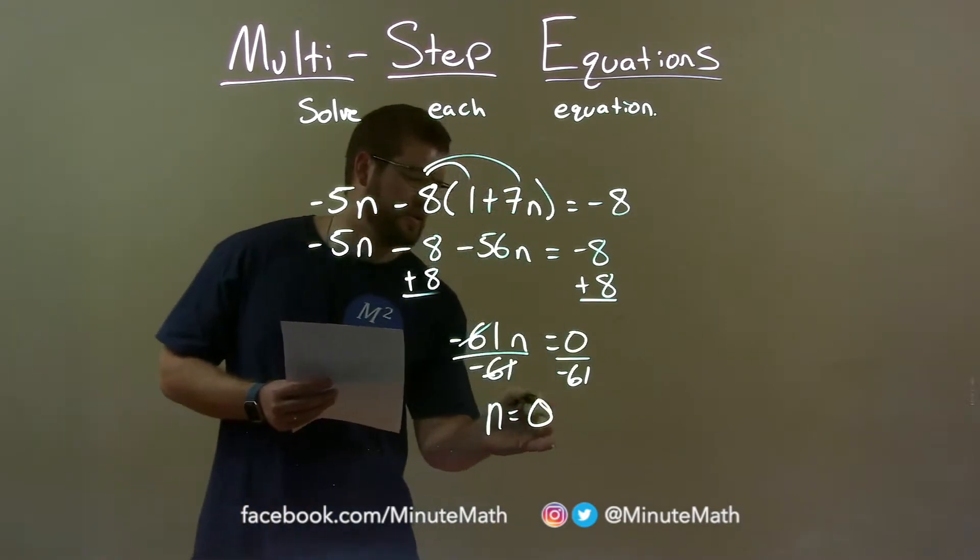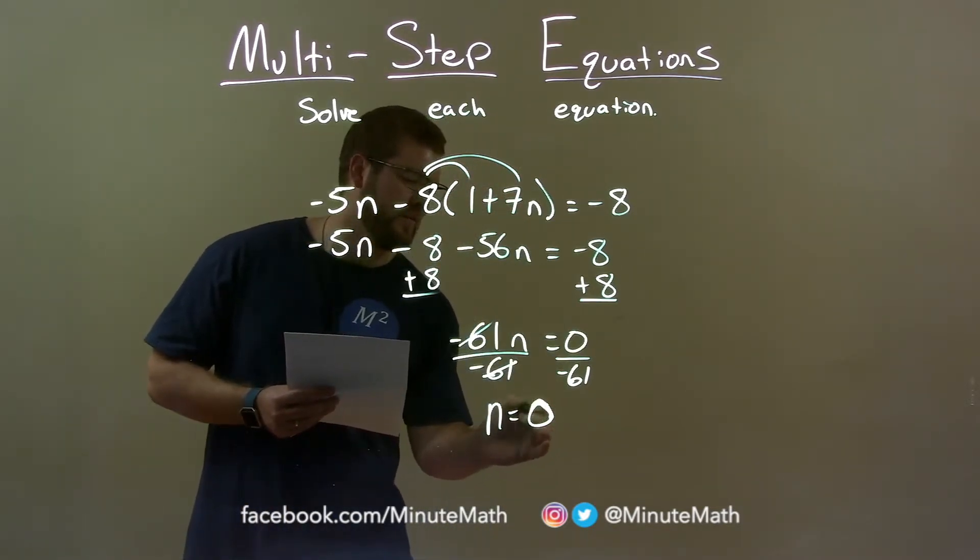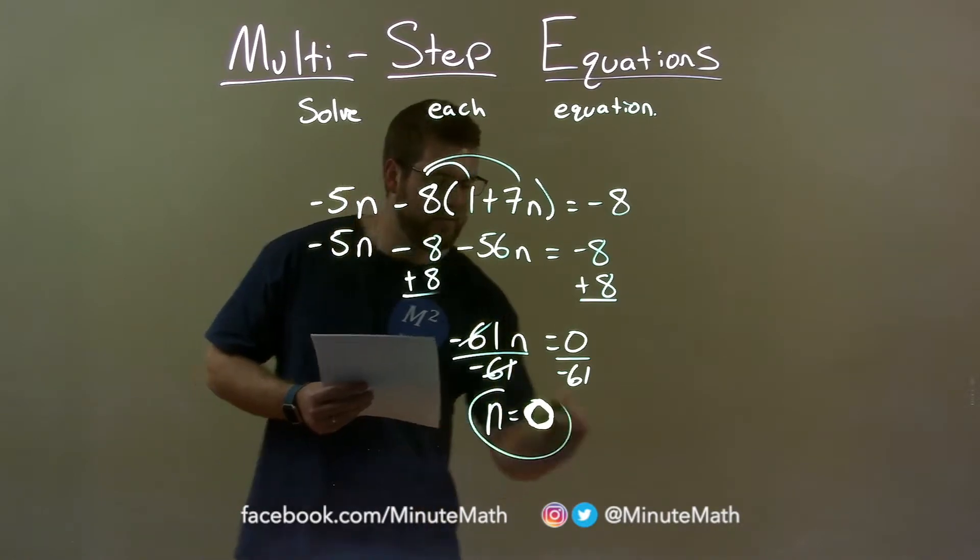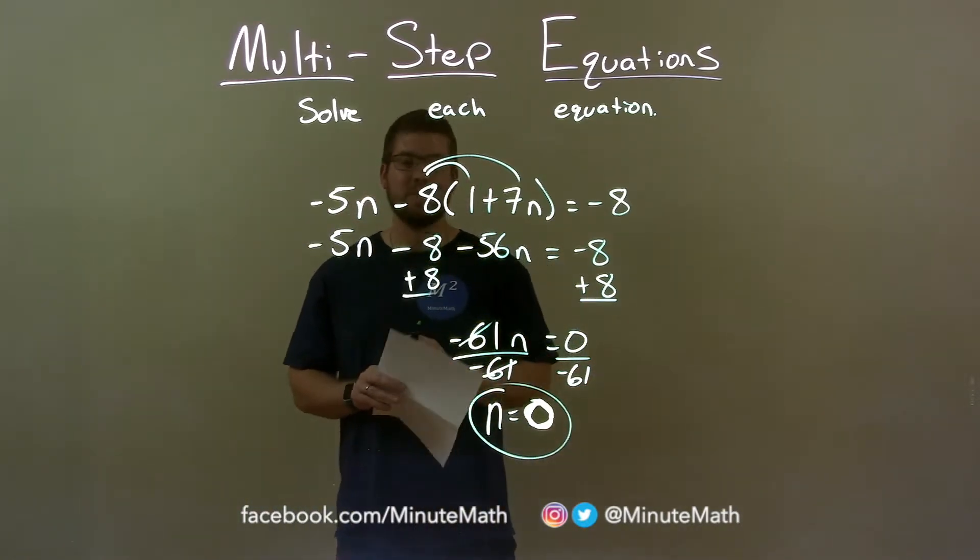Well, that's almost like a Hershey kiss, but it's a 0. There we go, it's a 0. And so our final answer here is just n equals 0.